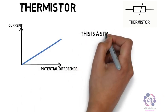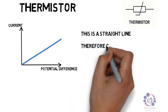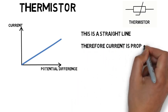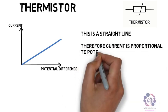Therefore, this means that current is proportional to potential difference and so a thermistor is regarded to be an ohmic resistor.